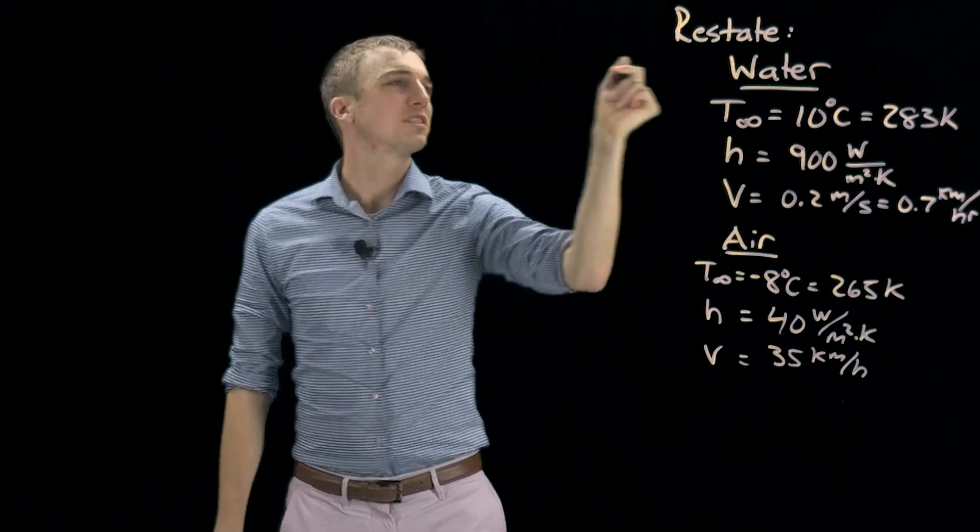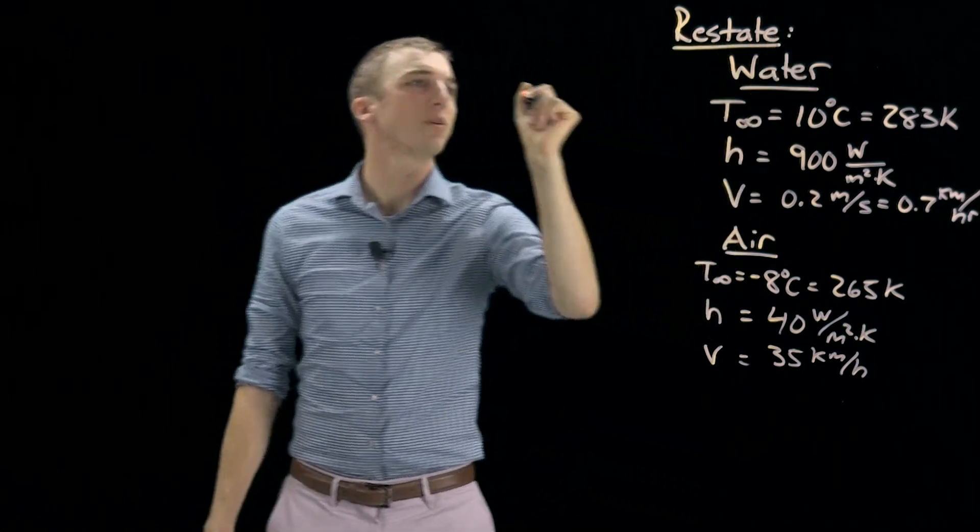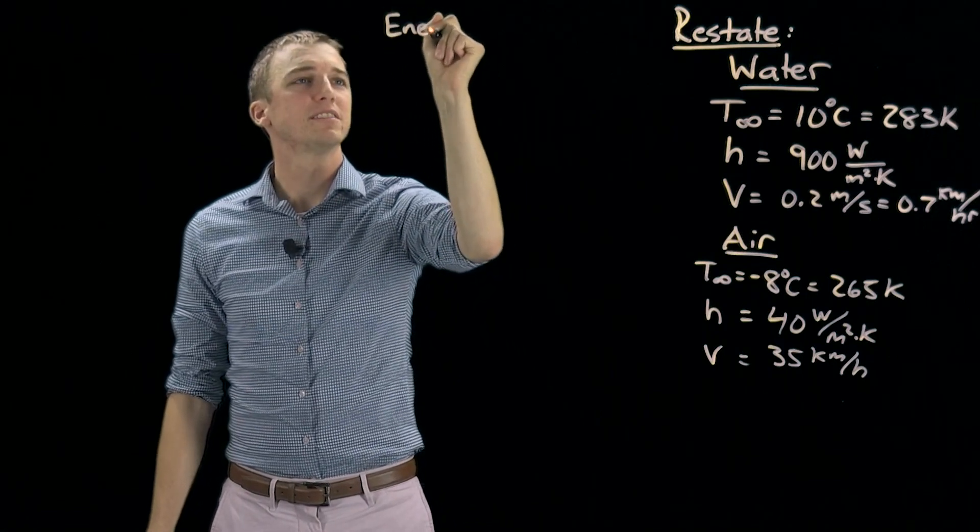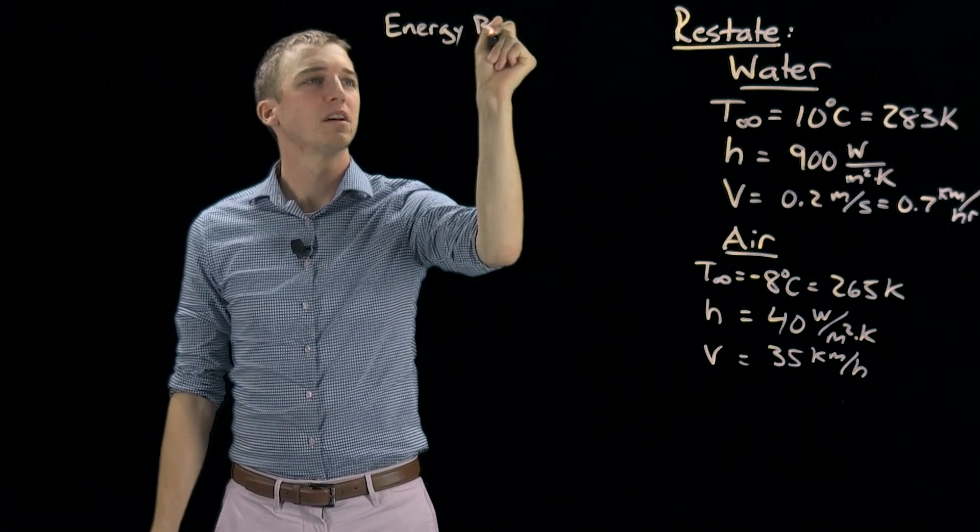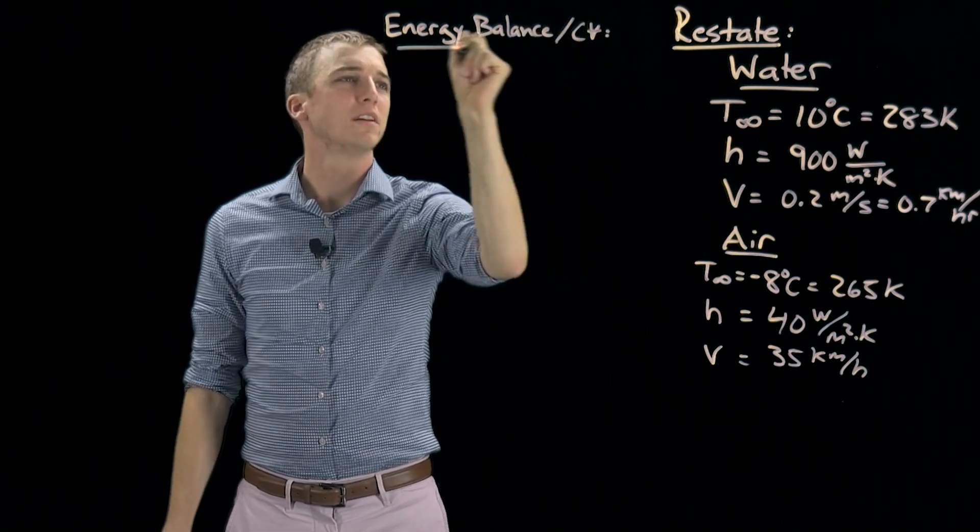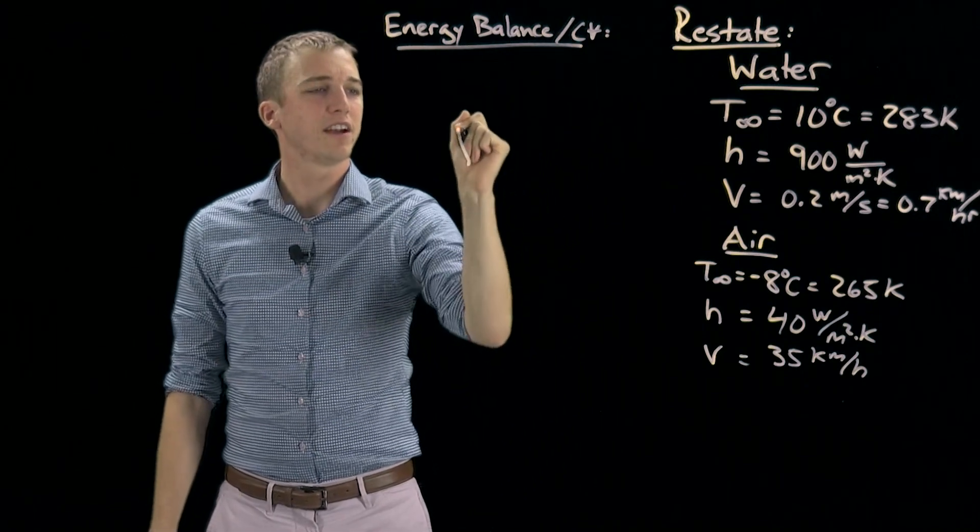We will start by doing the second part of our problem, which is the energy balance on a control volume. So we will draw our hand, which looks something like this.